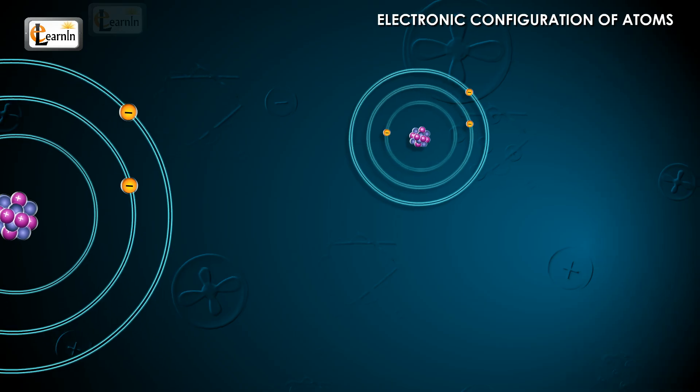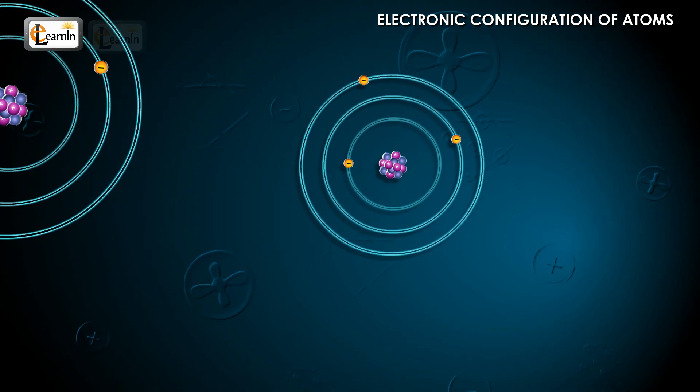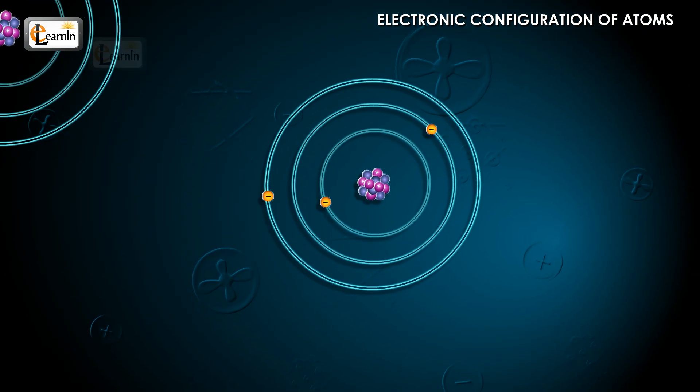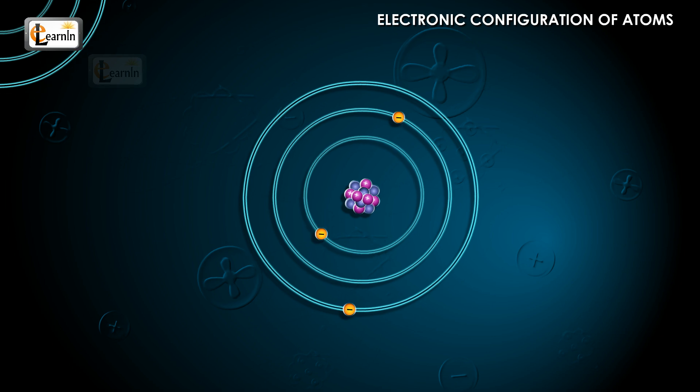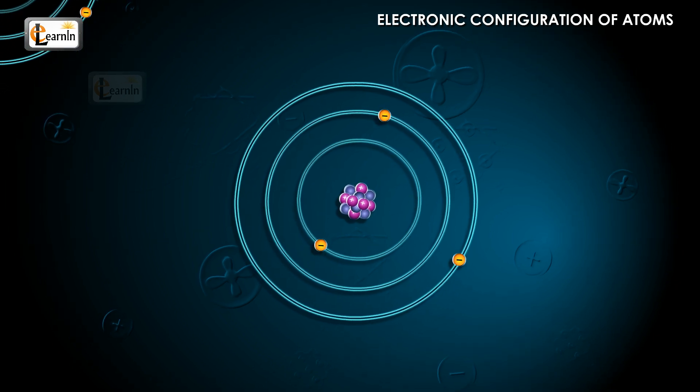Electronic Configuration of Atoms. We know that atomic orbitals are the substationary states or the regions in space where the electrons revolve around the nucleus in an atom.